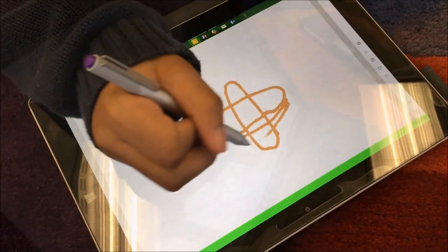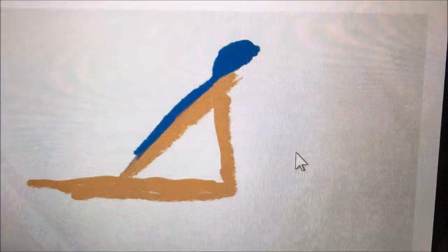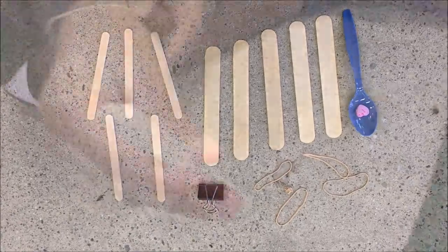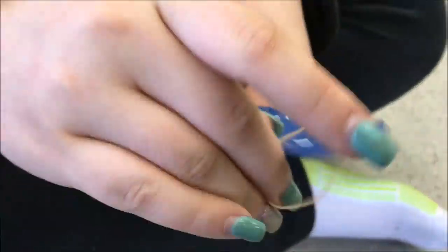We moved on to sketching. We all made our own individual sketches and later combined our ideas together and made a final sketch around the materials we received. We started to build our catapult.